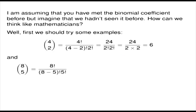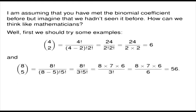And we can do another one: 8 choose 5, that's 8 factorial over 3 factorial times 5 factorial. We can do a little bit of calculation here, and that will come down to being 56. Note that in both cases, even though the definition involves a fraction, the final number turns out to be a whole number.